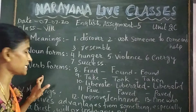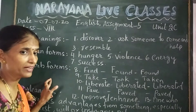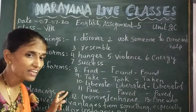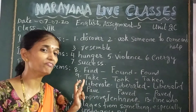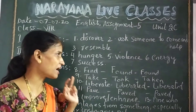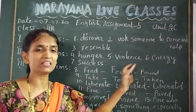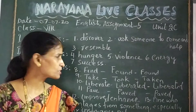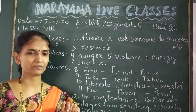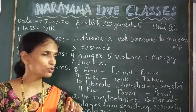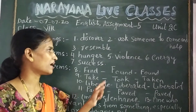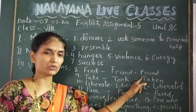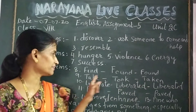The third question in the assignment is to write the other forms of the given verbs. We are given the verbs in the V1 form and asked to write the V2 and V3 forms. The first verb given is 'find'. The V2 and V3 forms are both 'found' — find, found, found.